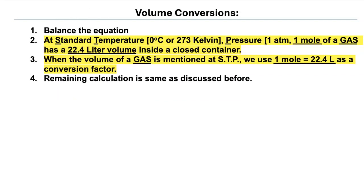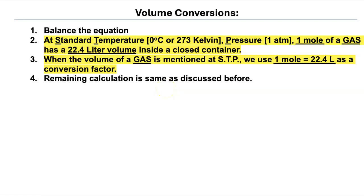To do these conversions, balance the equation just like before, then check if the problem is at standard temperature and pressure. Standard temperature is zero centigrade, or 273 Kelvin. Standard pressure is one atmosphere. Under STP, one mole of any gas occupies 22.4 liters in a closed container. Only when the volume of a gas is at STP can you use the conversion factor: one mole equals 22.4 liters.